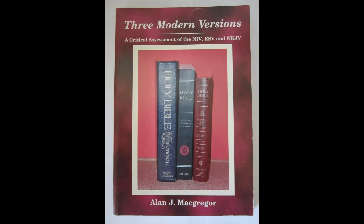Six: confusing use of oblique text for Old Testament quotations and italic text for added words not in the original language text — this can lead to mistaking one for the other. Seven: capitalization of pronouns for the deity can lead to confusion and misinterpretation.